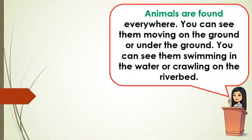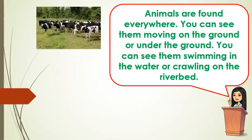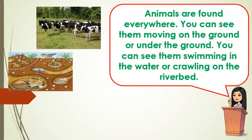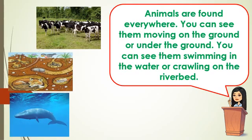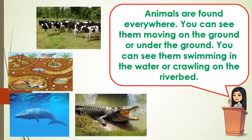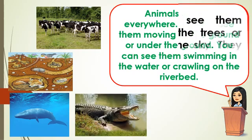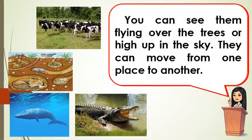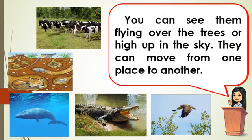Animals are found everywhere. You can see them moving on the ground or under the ground. You can see them swimming in the water or crawling on the riverbed. You can see them flying over the trees or high up in the sky. They can move from one place to another.